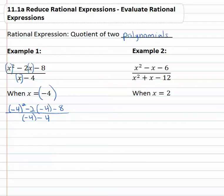And then just simplify what's left. Order of operations tells us to do exponents first. Because the negatives in parenthesis we're squaring the whole thing, giving us positive 16 minus 2 times negative 4 minus 8 over negative 4 minus 4.